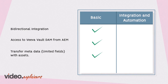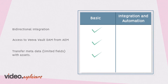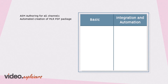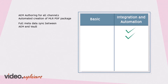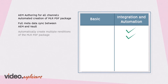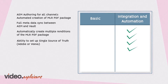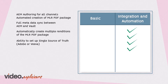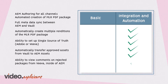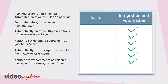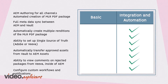These features and others are a significant step in the right direction. But the integration and automation platform has the connector functionality, plus it supports modular content, AEM authoring for all channels, automated creation of MLR and distribution packages, visibility of expired assets, ability to see Viva annotations in AEM, and much more.